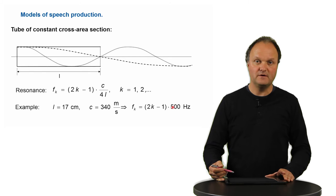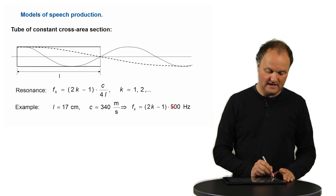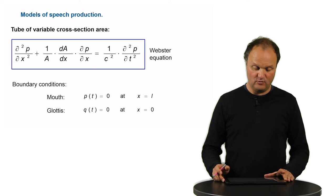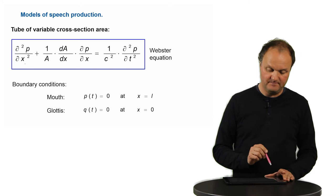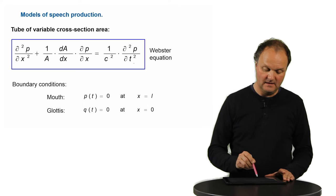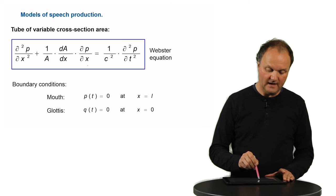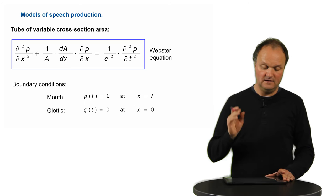Now, this is the simple case of a tube with constant cross-area section. If we have variable cross-section area, we have to resolve more complex equations, namely the so-called Webster equation, which is a differential equation where we have the double derivative of the sound pressure over the x coordinate, and we have the double derivative of the sound pressure over the time t, and we also have a simple derivative of the sound pressure over x, which is determined by this dA over dx. A is the area of your tube element.